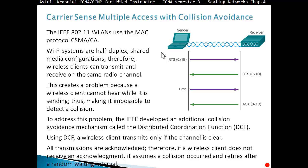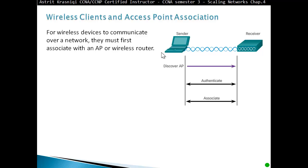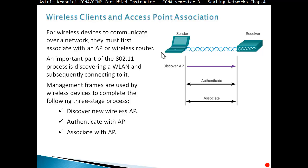For wireless devices to communicate over a network, they must first associate with an access point or wireless router. An important part of the 802.11 process is discovering a WLAN and subsequently connecting to it. Management frames are used by wireless devices to complete the following three stage process: First, discover new wireless access point. It's like when you open your mobile phone and scan for new networks. Once you click one of them, it gives you a challenge - what's the password. You are authenticating with that access point. Then if the authentication is successful, you associate with the access point which sends you an IP address and other information.